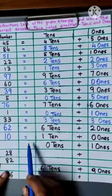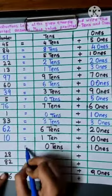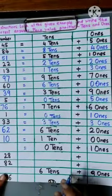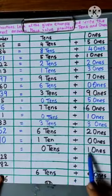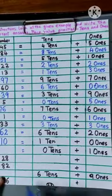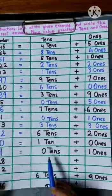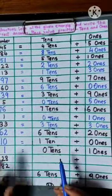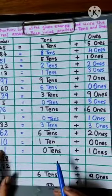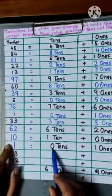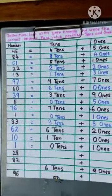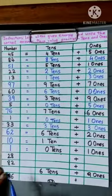Now, look here. There are 0 tens and 1 ones. That means number is 1. Even when there is 0 over here, we are not going to write 0 over here. When there is 0 in tens place, we are not going to write 0.